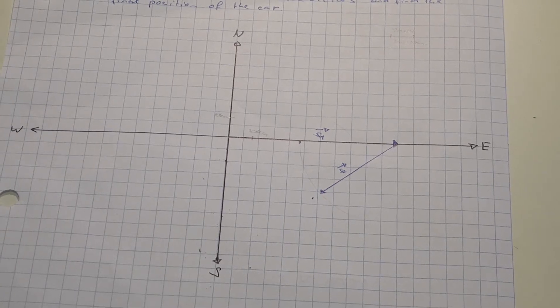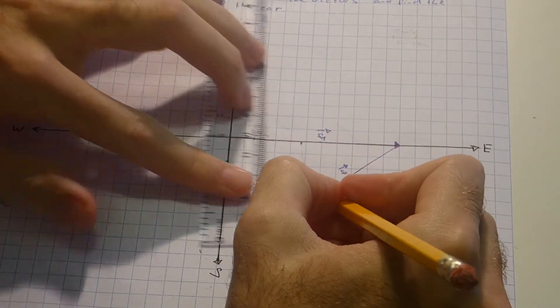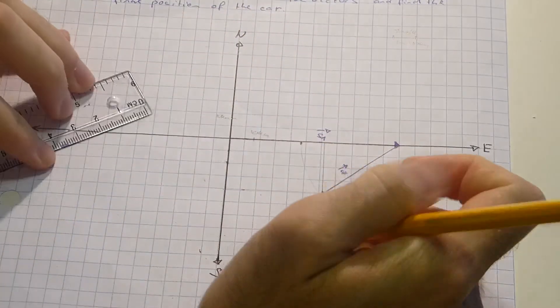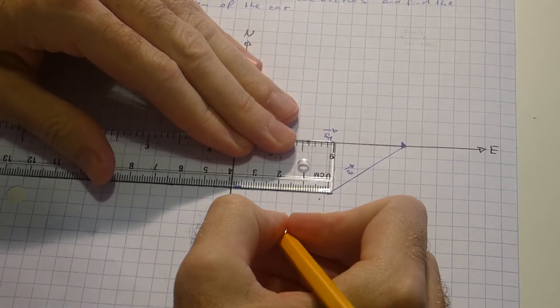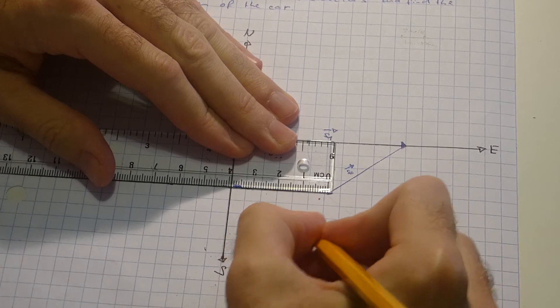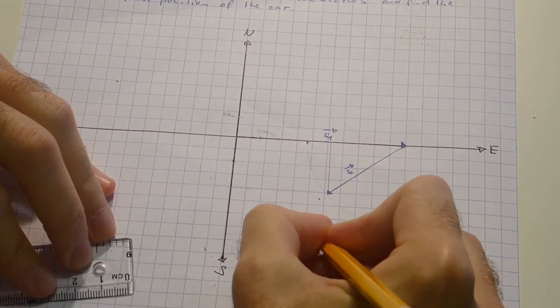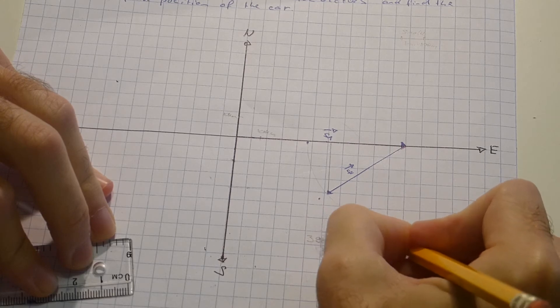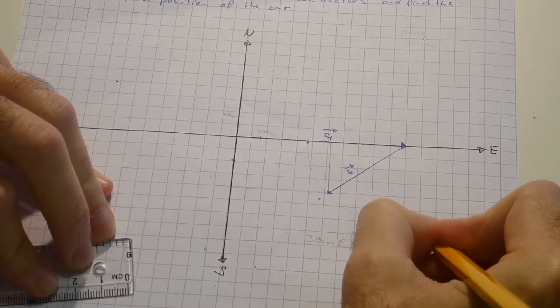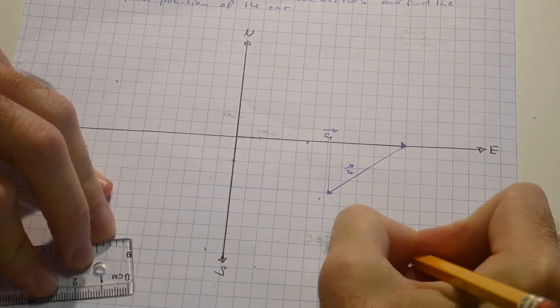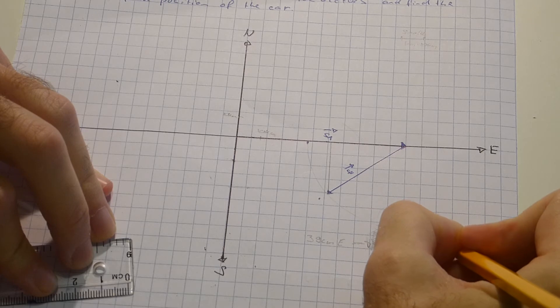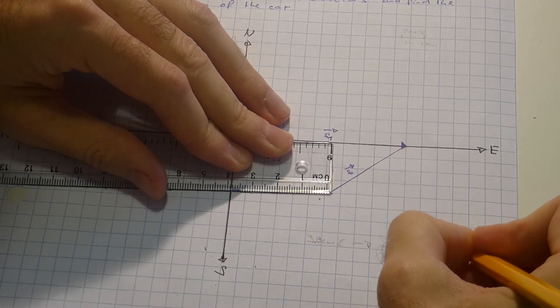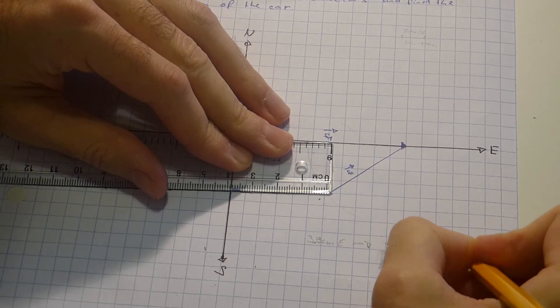Now if you want to measure the final position, you can look at how much south we are and how much east we are actually. So here I have 39 cm east, which corresponds to according to this scale, 39 cm times 10 km. Divide the centimeters out, gives me 3.9 here. This is 39 km east.